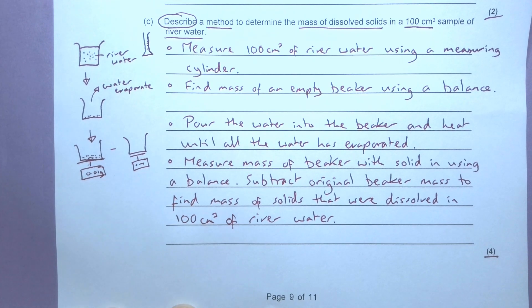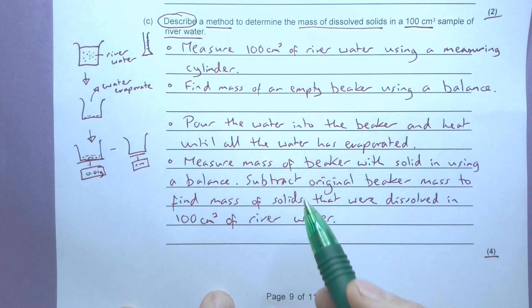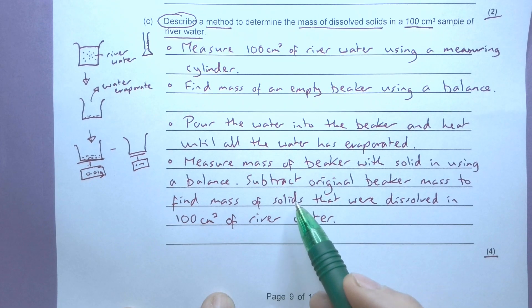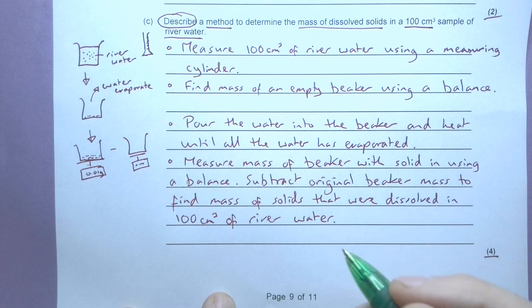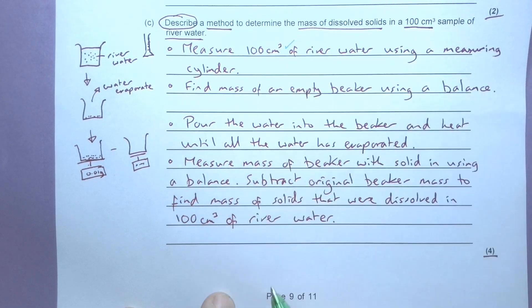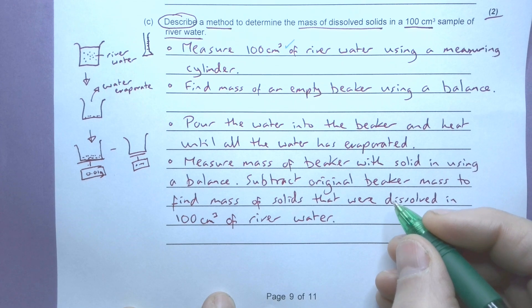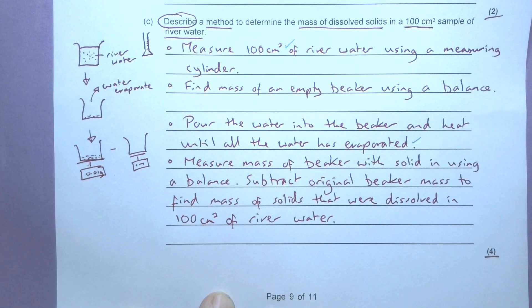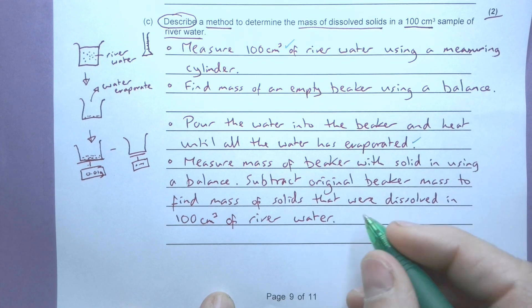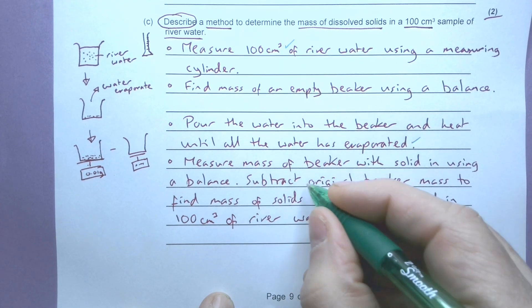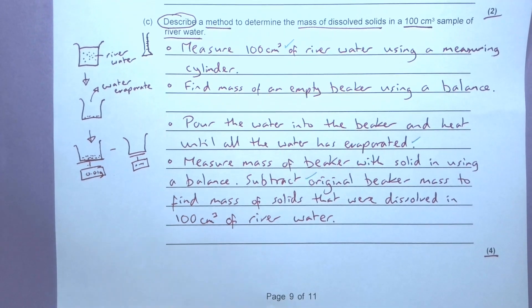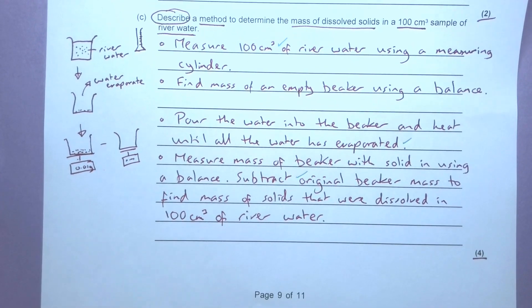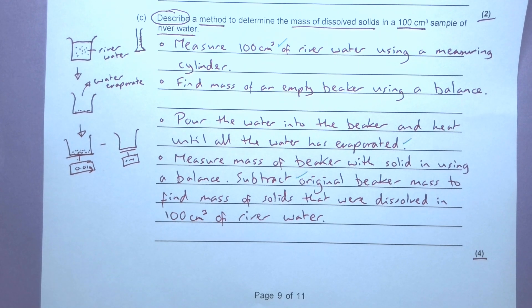And just going through the mark scheme, the thing here to get the top marks for this - I have to make sure that there are three bits. I have to make sure that I've got that 100 centimeters cubed of water, I have to make sure that I heated it until it is dry till all the water is evaporated, and also I have to have some way of saying that I'm going to subtract the original beaker mass to find the mass of the dissolved solids.